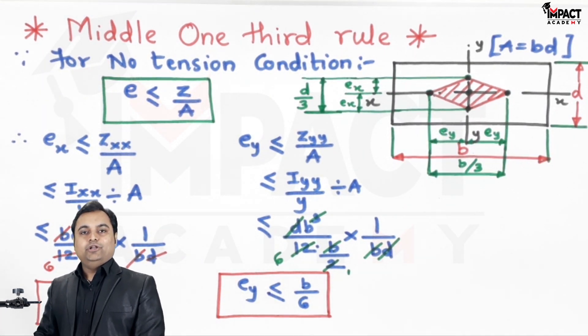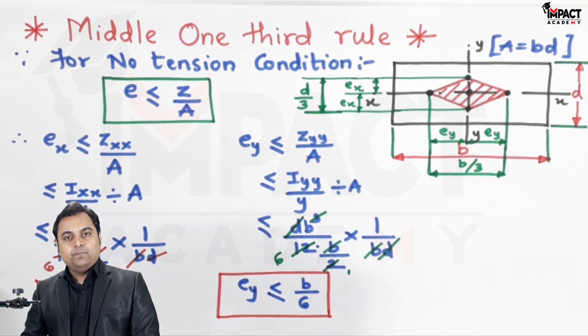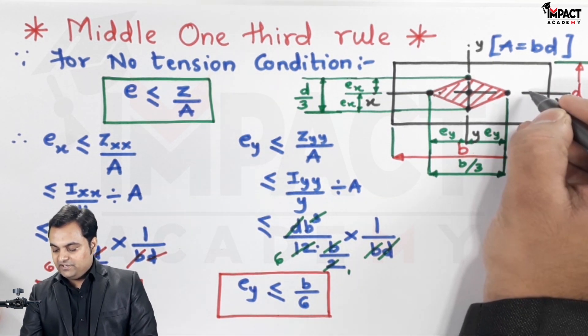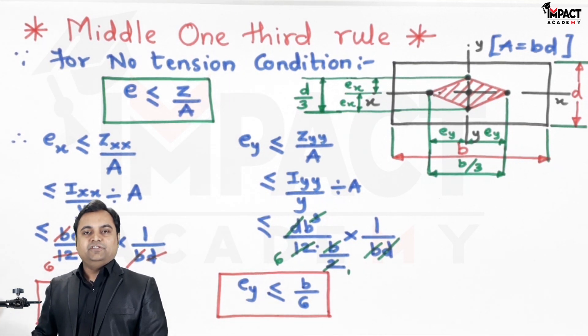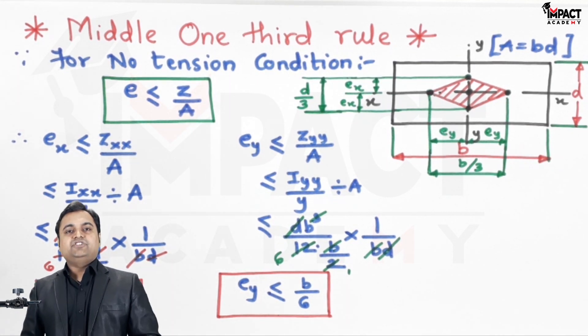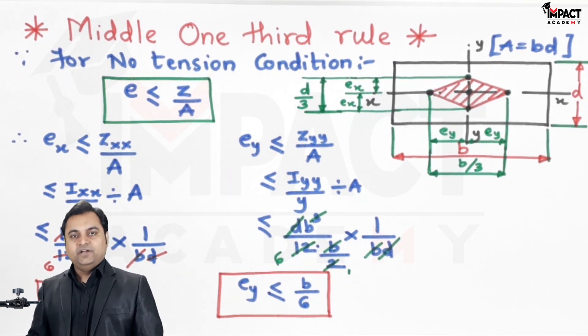But the moment we move the load away from this area, anywhere outside it, it will result in tension in the section. So to avoid tension in the section which is not desired, we have to place the load in this region for a rectangular section.